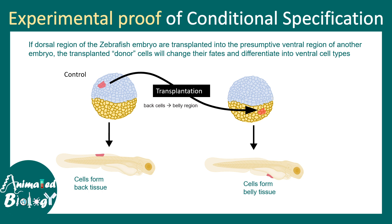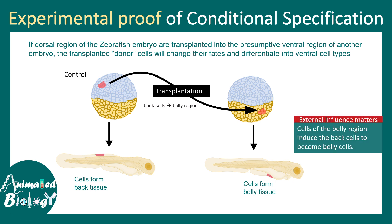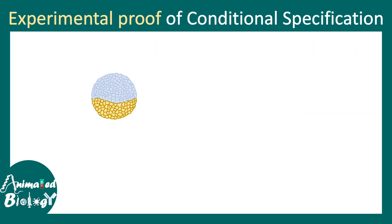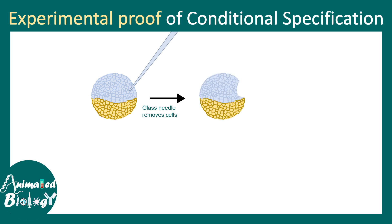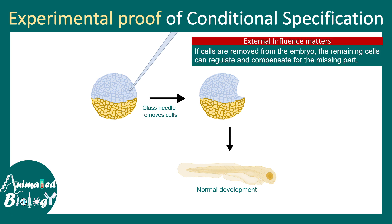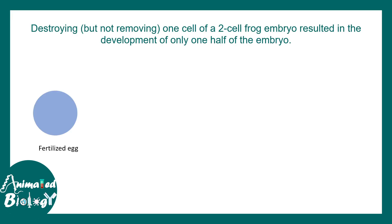This experiment proves that how a cell interacts with its neighbors is really important for its fate choice. Another way of demonstrating this is by ablating a selective region of the embryo. Using a glass needle, some cells were removed from a blastula, and it was noticed that this did not affect embryonic development — the larva actually matured normally. This tells us that the remaining cells can regulate and compensate for the missing part.